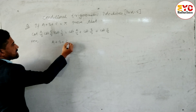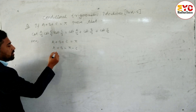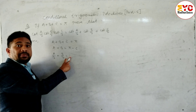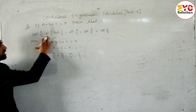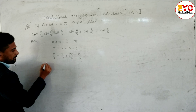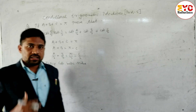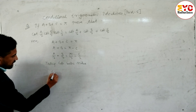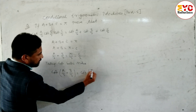So a plus b plus c equals pi gives a plus b equals pi minus c. We divide both sides by 2: a/2 plus b/2 equals pi/2 minus c/2. Since the expression is in the form of cot, we take cot both sides. Taking cot both sides: cot(a/2 + b/2) is equal to cot(pi/2 minus c/2).